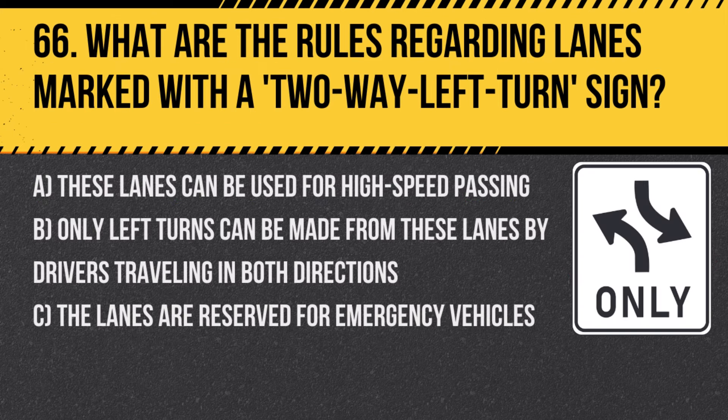Question 66: What are the rules regarding lanes marked with a two-way left turn sign? A. These lanes can be used for high-speed passing. B. Only left turns can be made from these lanes by drivers traveling in both directions. C. The lanes are reserved for emergency vehicles. Answer: B. Only left turns can be made from these lanes by drivers traveling in both directions. This lane is specifically designed for vehicles from both directions to safely make left turns.